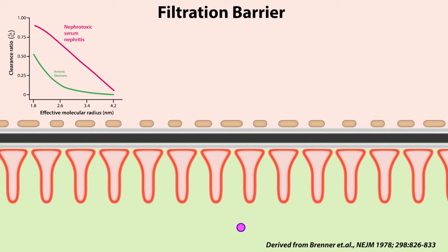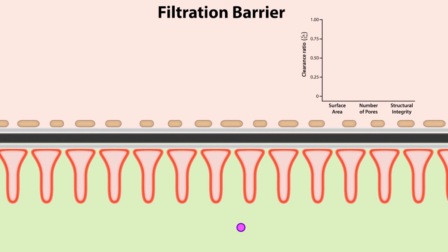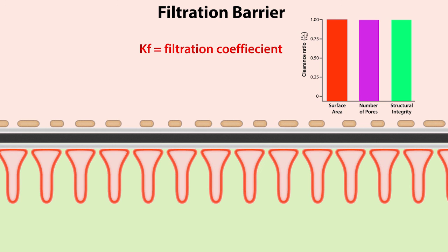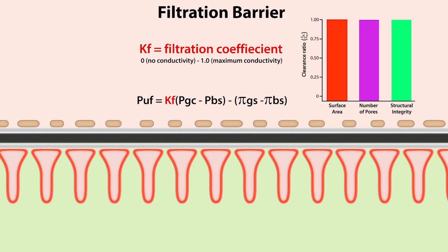Applying the concept of perm selectivity to the filtration barrier as a whole: the size and charge of a molecule influences its perm selectivity. Similarly, the glomerular endothelial capillary surface area, number of capillary pores, permeability, and structural integrity of the glomerular basement membrane and podocyte foot processes influence the filtration barrier's conductivity. This is referred to as the filtration coefficient, denoted as Kf, ranging from zero to one, where zero lacks conductivity and one is maximally conductive. Kf plays a central role in net ultrafiltration pressure and is included in the equation used to calculate it.